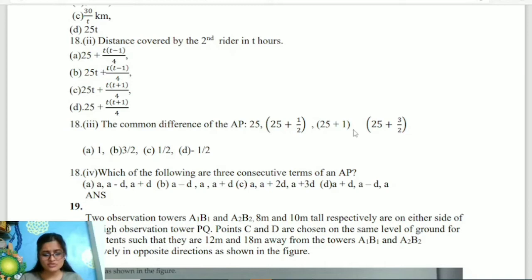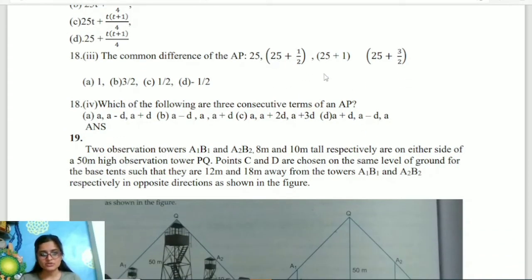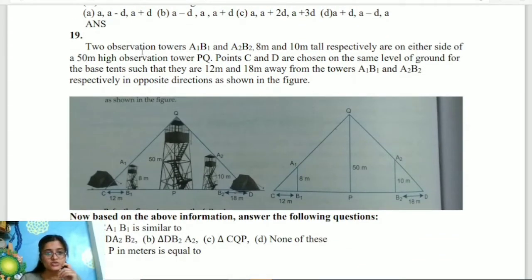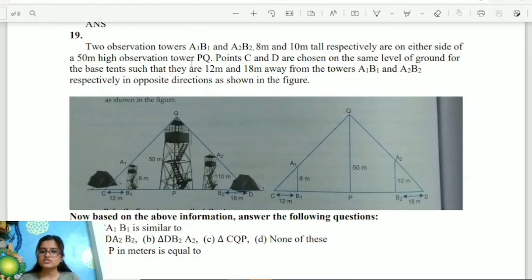Question 18 continued: What is the common difference of the AP 25, 25 plus 1 by 2, 25 plus 1, 25 plus 3 by 2. This common difference can be solved easily. Which of the following are the 3 consecutive terms of an AP. We know the consecutive terms can be represented as A minus D, A, A plus D. Very easy. Question 19: Two observation towers A1B1 and A2B2, 8m and 10m tall respectively, are on either side of a 50m high observation tower PQ. Points C and D are chosen on the same level of ground from the base such that they are 12 and 18m away from the towers A1B1 and A2B2 respectively in opposite direction as shown in the figure. Triangle CA1B1 is similar to which triangle. Now we will tell which triangle is similar. Then find B1P in meters. We can find B1P value, and then distance between B1 and B2.